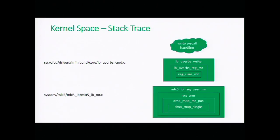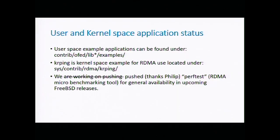After handling the write syscall, the ib_uverbs character device implements the write callback, which calls reg_user_mr — a callback that must be implemented by the vendor's RDMA driver — which ultimately calls dma_map_single, the actual memory pinning operation. For easier use cases, we have pushed to FreeBSD 11 and 12 both contrib/ofed/libibverbs examples and multiple user-space applications to investigate or play with RDMA. We also have sys/contrib/rdma/krping, a kernel application example. Recently, thanks to Philip, we pushed perf_test, a micro-benchmarking tool for RDMA.